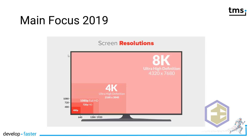Another major undertaking in 2019 was dealing with different screen resolutions and screen densities. Screen resolutions have grown significantly since the inception of Delphi — it all started with 480p, as it's called now, and now we have to deal with 8K ultra-high definition displays.